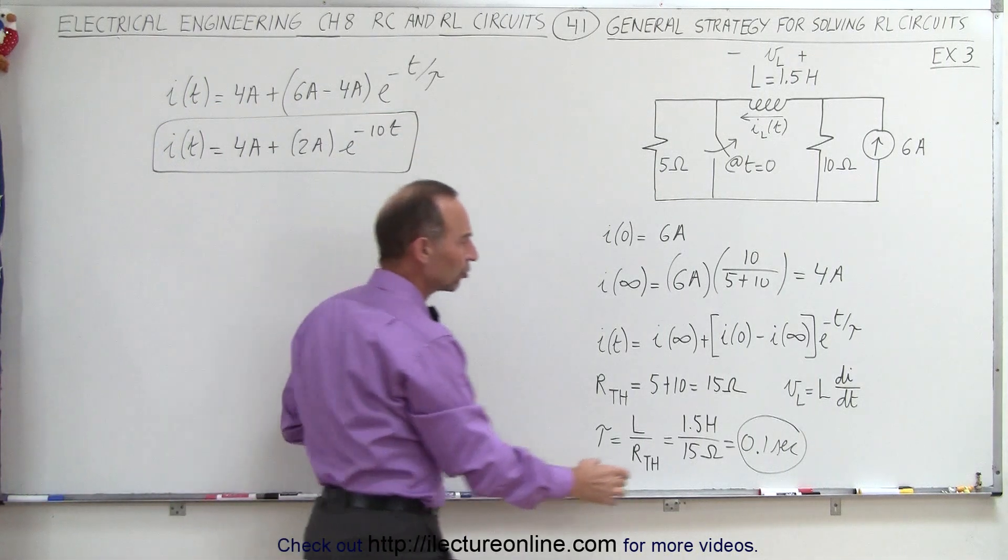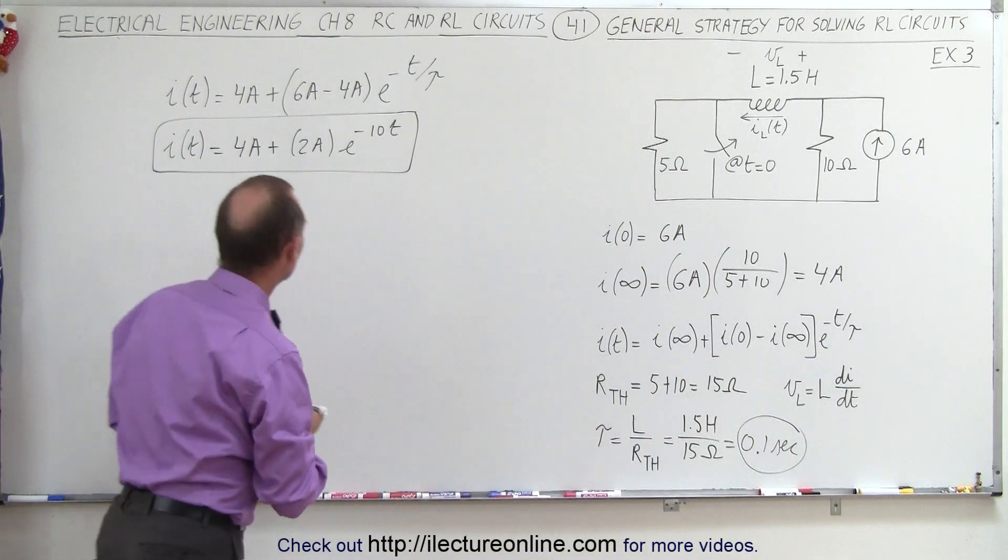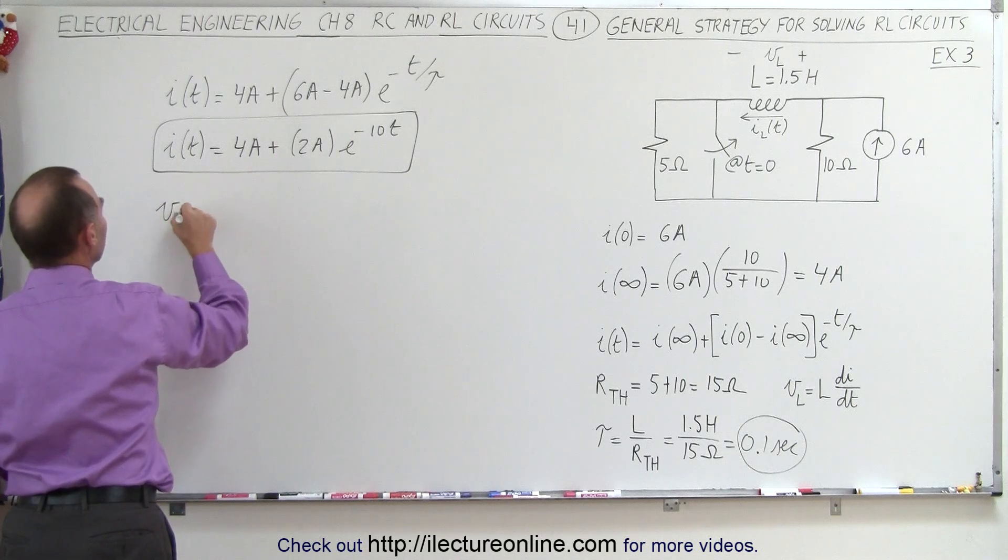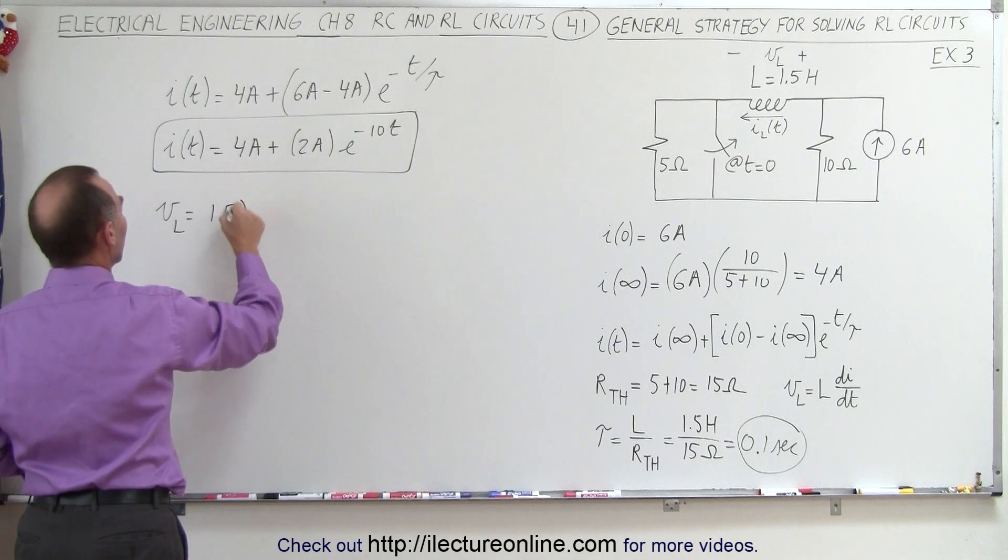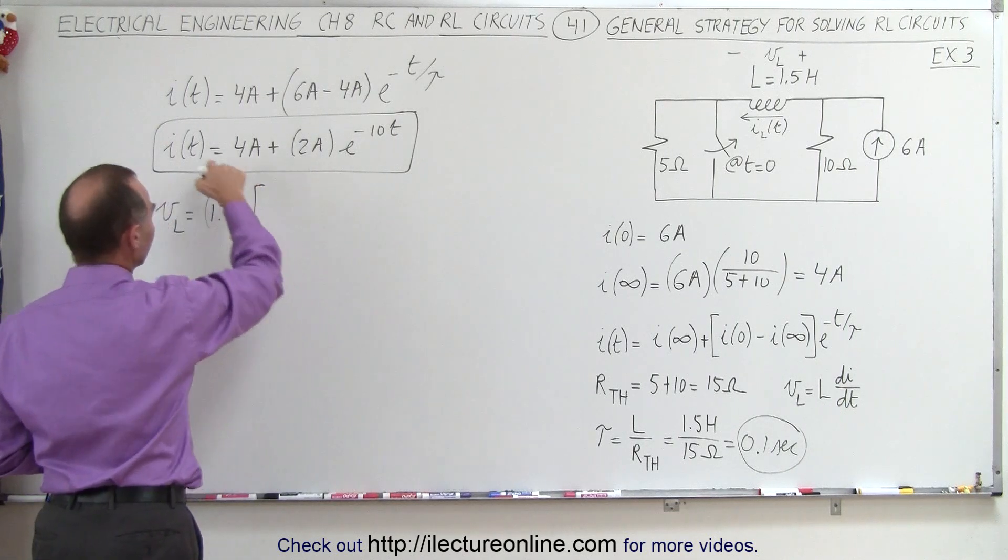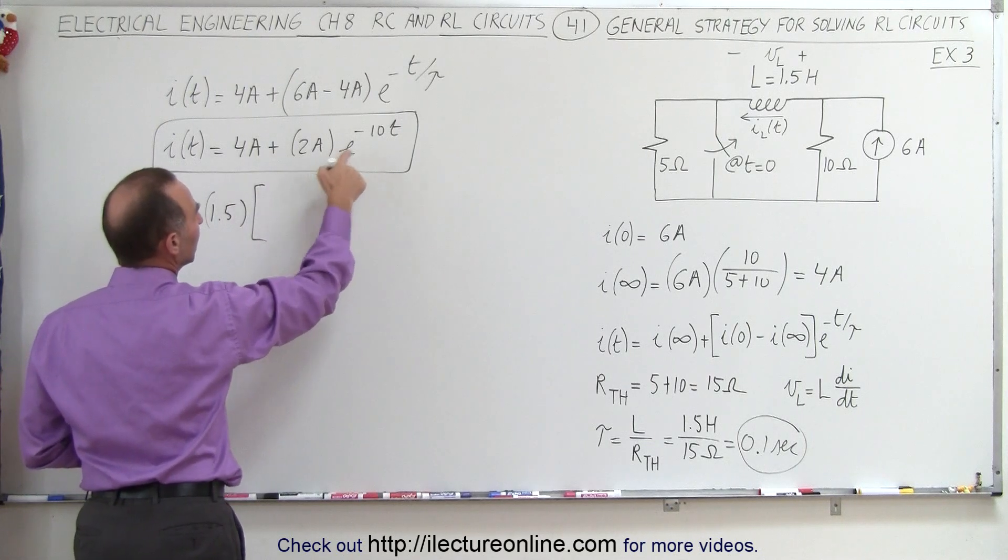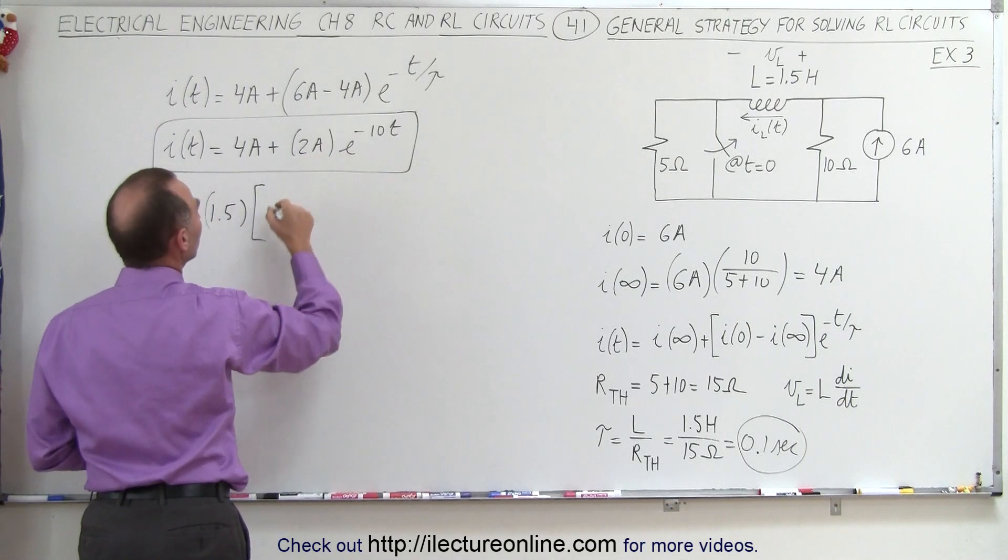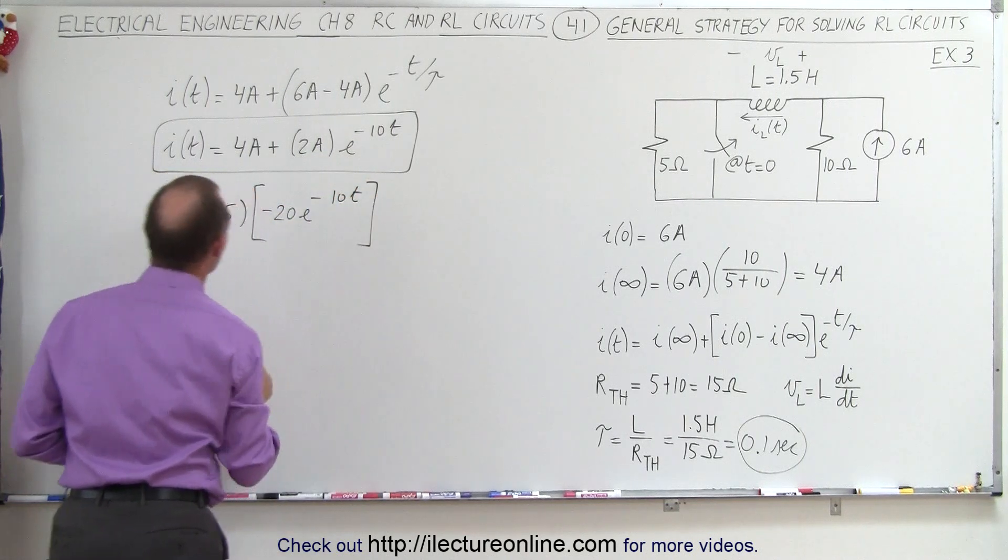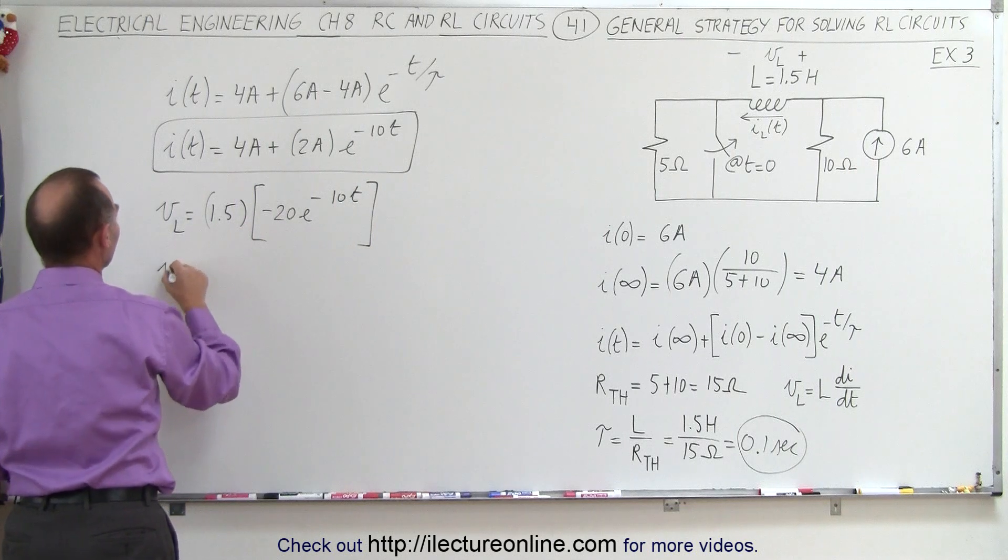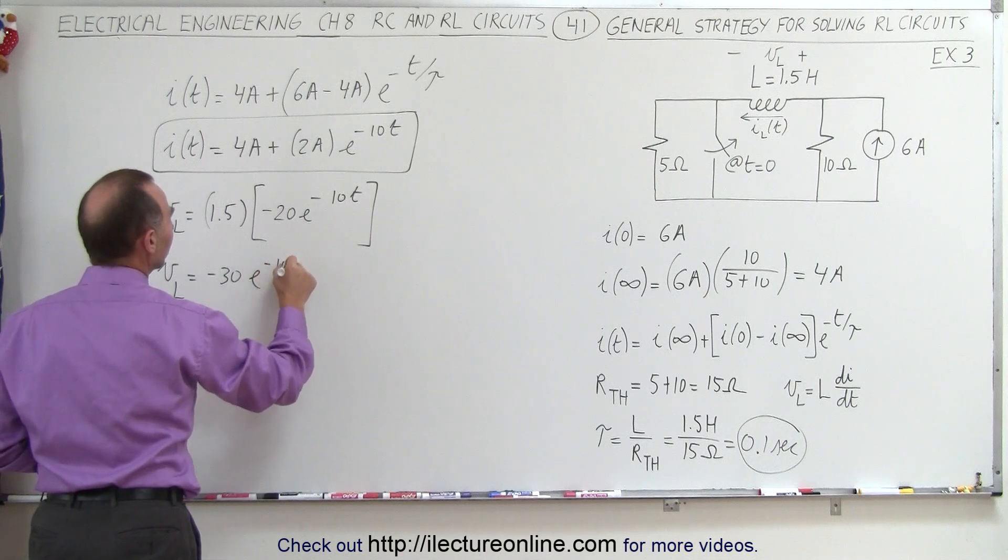Now we want to find the voltage across the inductor. We simply multiply the inductance times the rate of change of the current with respect to time. So V sub L is equal to the inductance L which is 1.5 multiplied times the derivative with respect to time of this. So the derivative of this is 0 and the derivative of this would be minus 10 times 2 which is minus 20 e to the minus 10 times T. And multiply this times this, we get the voltage across the inductor is equal to minus 30 e to the minus 10T.